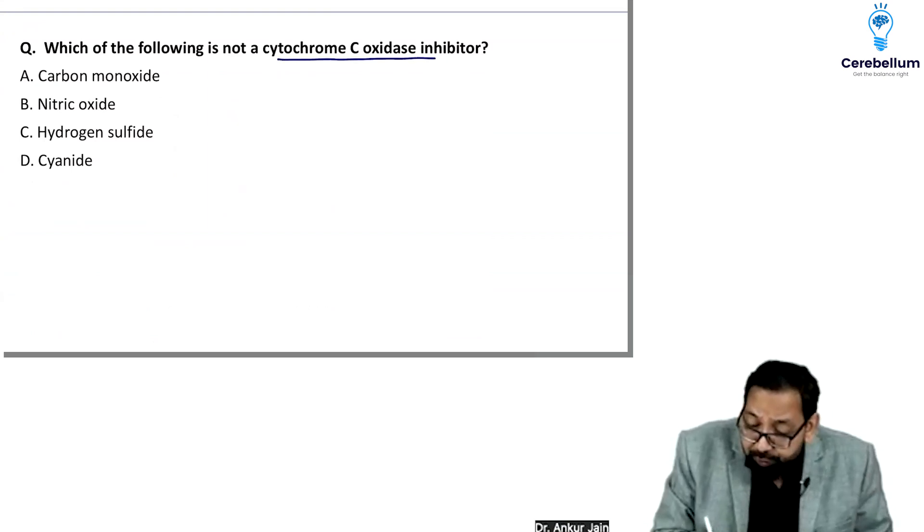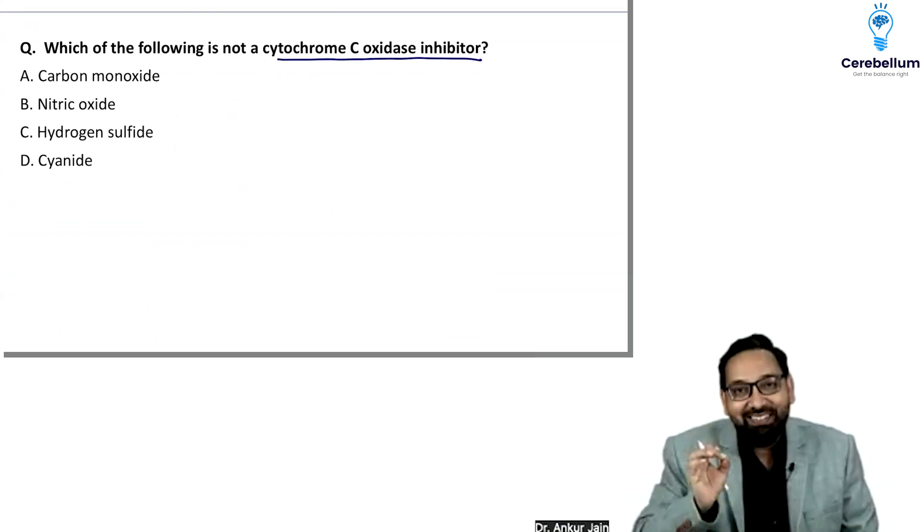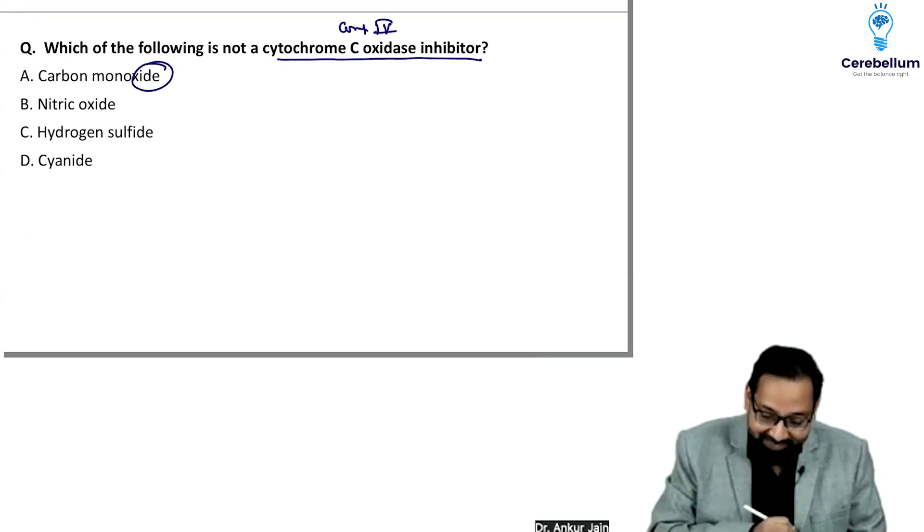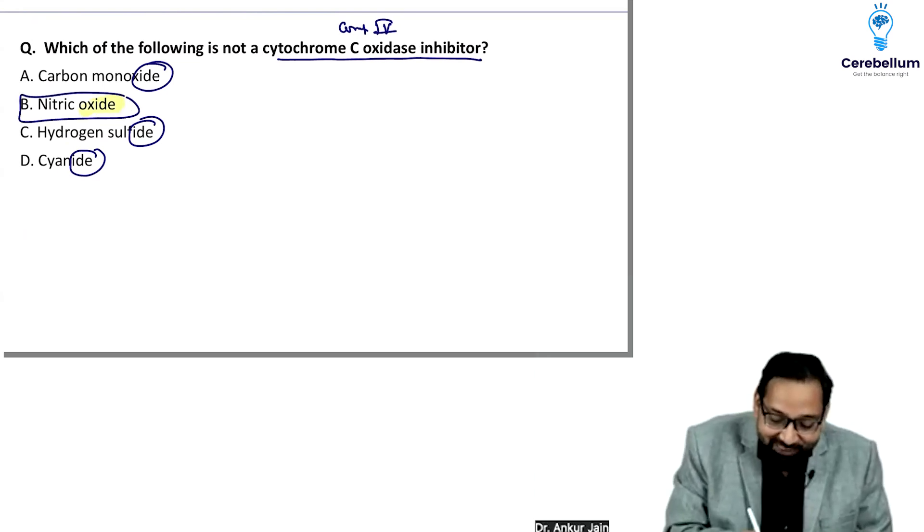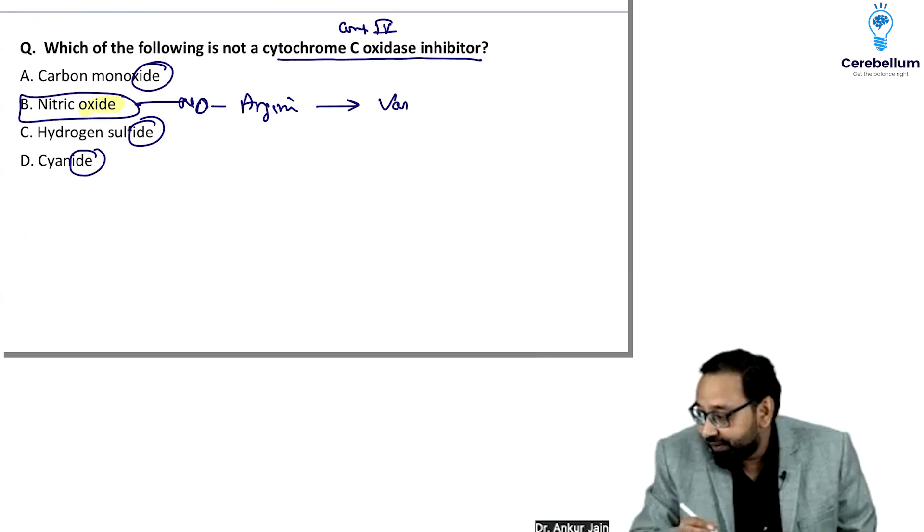Which is a cytochrome C oxidase inhibitor? We made mnemonic 'IDE' for complex four: carbon monoxide, hydrogen sulfide, cyanide. But they gave you option nitric oxide. NO is synthesized from arginine and is responsible for various functions.